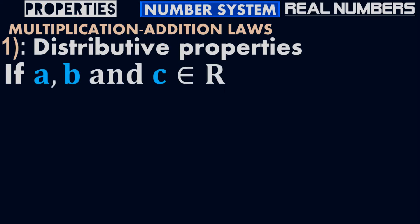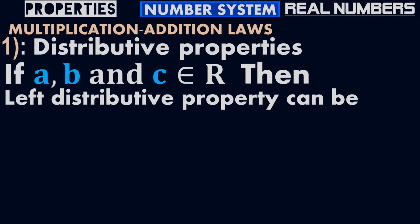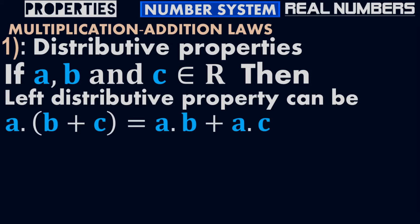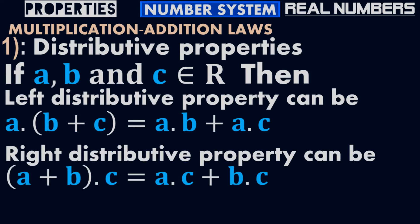If a, b, and c belong to real numbers, then the left distributive property is: a times (b + c) equals a times b plus a times c. The right distributive property is: (a + b) times c equals a times c plus b times c. These are called the multiplicative addition laws because they involve both multiplication and addition.